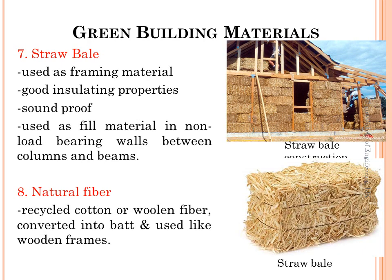The seventh green building material is straw bale. Straw bale is a green building material which can be used as a framing material because of its good insulating properties. It also acts as a soundproofing material. It can be used as fill material in non-load-bearing walls between columns and beams. Since air cannot pass through it easily, straw bales also have some resistance to fire.